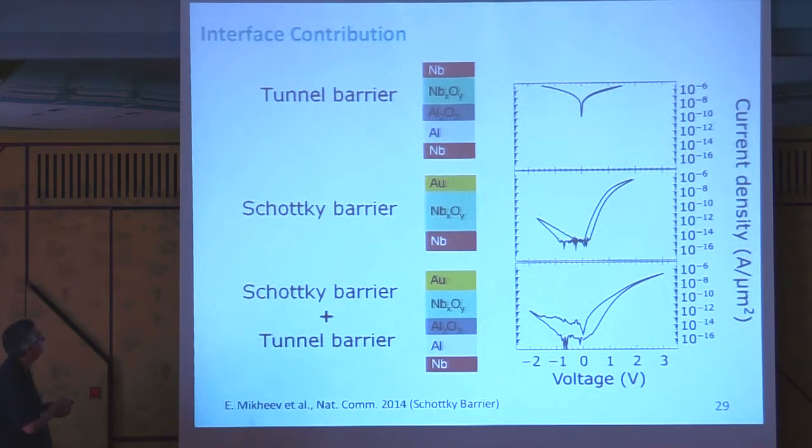Then we made different experiments, and indeed, this is with the tunnel barrier here, with the niobium layer on top, this is with the Schottky barrier alone, but then when we have the Schottky barrier and the tunnel barrier together, we get this kind of characteristic I've shown before. So we try to figure out what is most important in this kind of device.